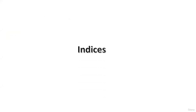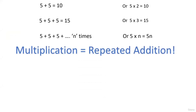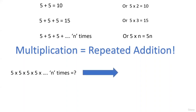Let's get started with the very first part: indices. Whenever we write five two times, five plus five is basically ten, so it's five into two. Five added three times is five into three, fifteen. So the number five when added n times is basically five into n. But if we're multiplying the number five n number of times — that's repeated multiplication — five into five into five n times is denoted by five raised to the power n.